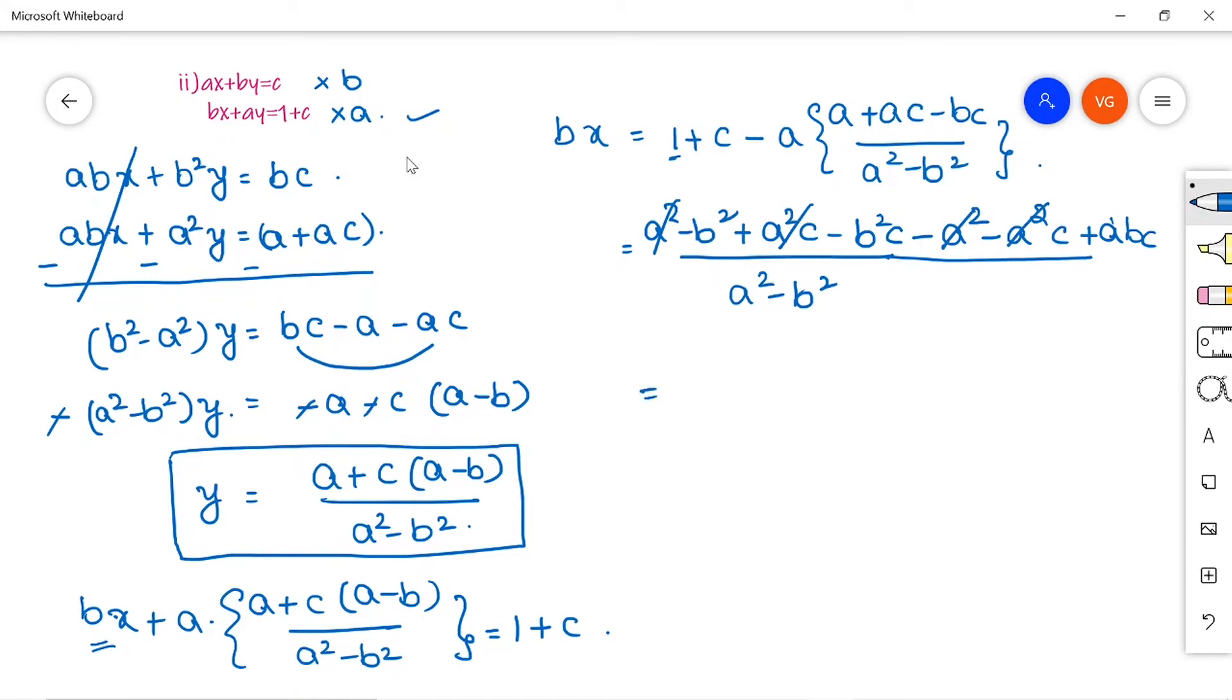So from the numerator, each and every term have B here. So I will take B common there. So if you take B common here minus B. From here also minus B, C plus AC will be left with this one divided by A square minus B square. Don't forget here for us on the left hand side we have BX. So this B will get cancelled. So X will be here minus B, minus BC plus AC divided by A square minus B square.